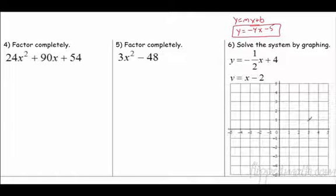Factor completely. The first thing you need to do is look to see if there's any greatest common factors. If you're not sure, you can start with the smallest number. Get some factors going. See what goes into it. Does 24 go into 90? No. Does 12? No. Does 8? No. Does 6? Yes. So I take a 6 out.